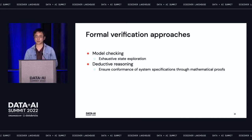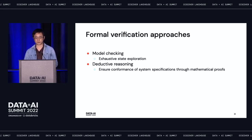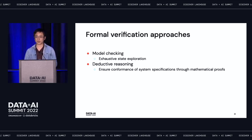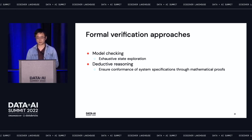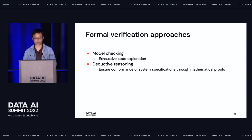There are two main approaches for formal verification. One is called model checking, which automatically explores all possible states of the program and for each state checks a list of predefined properties. The other approach is called deductive reasoning, which is closer to writing mathematical proofs for a program. In this talk, I want to focus on model checking because I think it's a much more practical approach for software engineers.